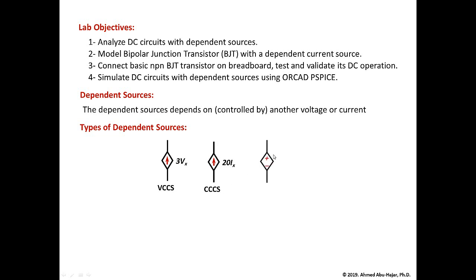Another type is a dependent voltage source. If you see a diamond shape with a polarity symbol inside, that means it's a voltage source. This voltage source depends on the voltage Vx, so we call it a voltage controlled voltage source — VCVS. Another type is a voltage source controlled by a current; for example, the voltage equals 10 times Iy, where Iy is another current in the circuit. This is called a current controlled voltage source — CCVS.